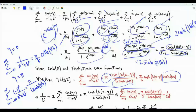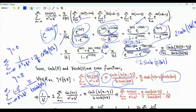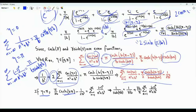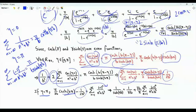Sometimes we want the sum from 1 to infinity rather than minus infinity to infinity. The summand is an even sequence, so the full sum equals the n=0 term (which is 1/b²) plus twice the sum from n=1 to infinity. Rearranging, we get a useful identity: 1/sinh(πb) = 1/(πb) + (2b/π)·Σ_{n=1}^∞ (−1)^n / (n² + b²).